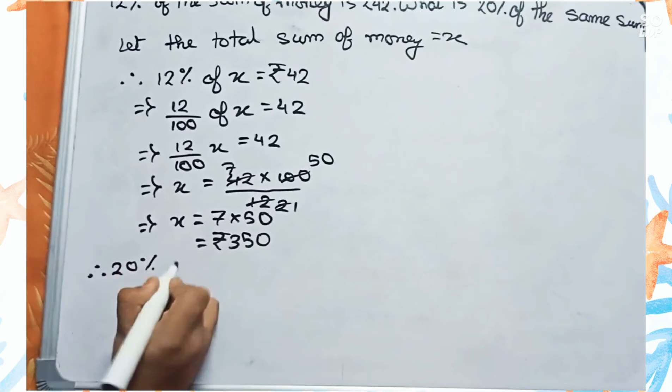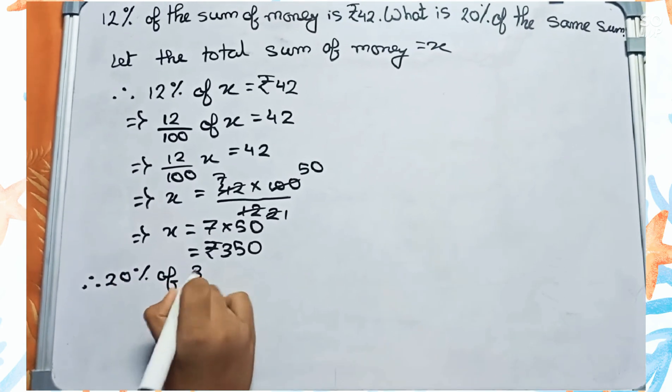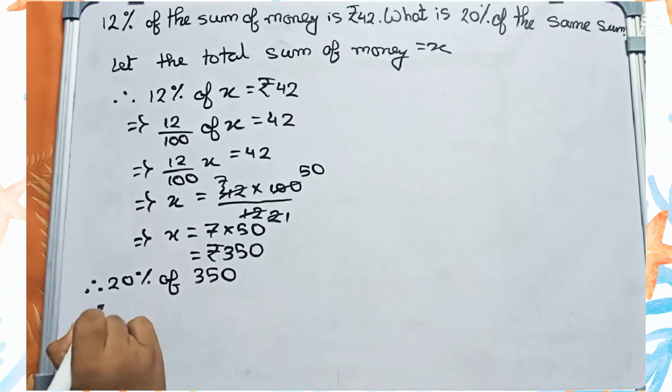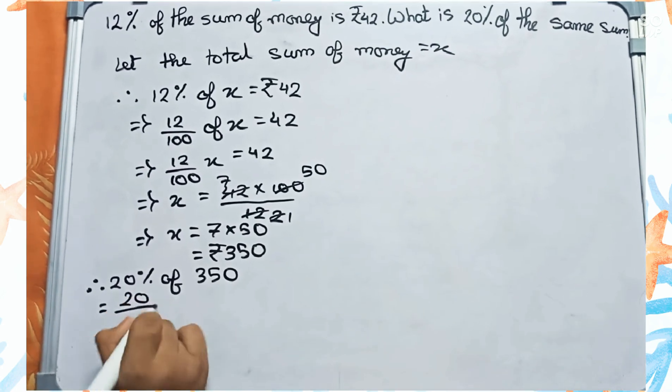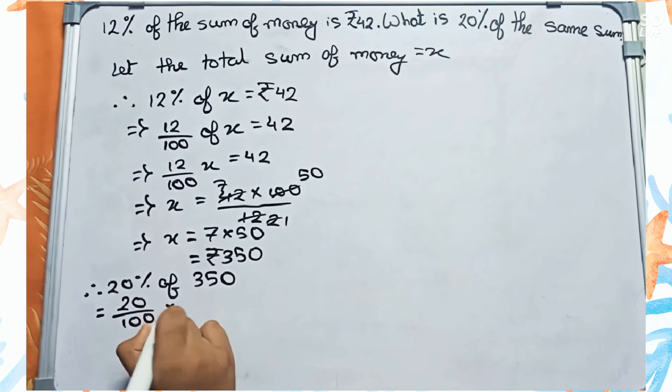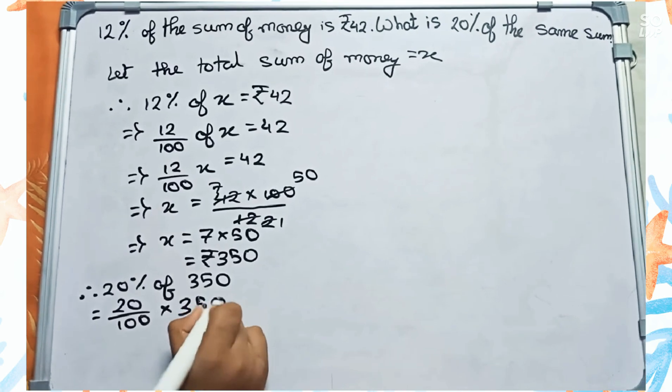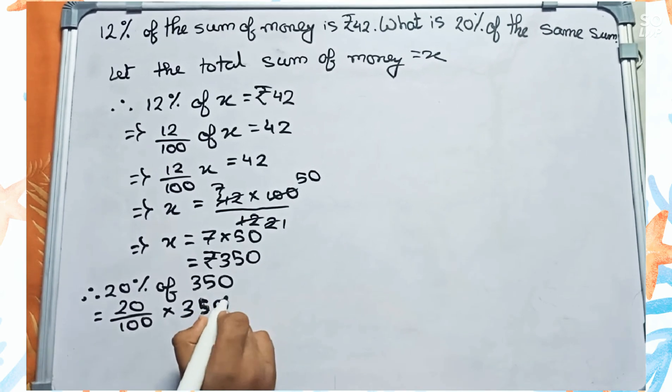It will become 20 by 100 into 350. We first cut the zeros.